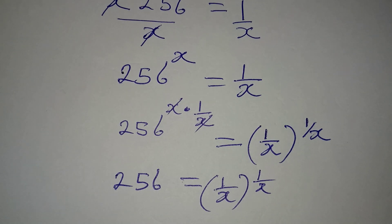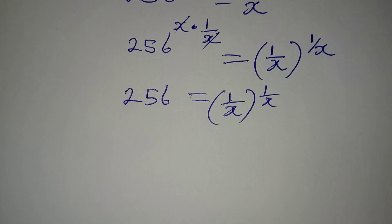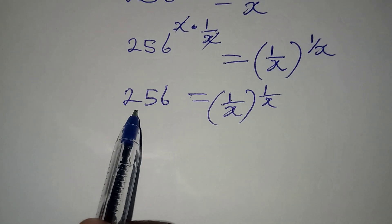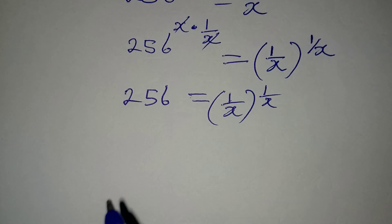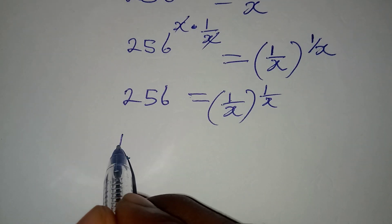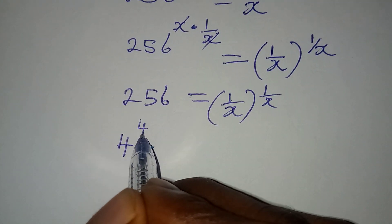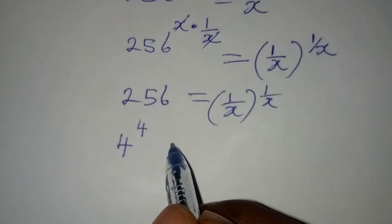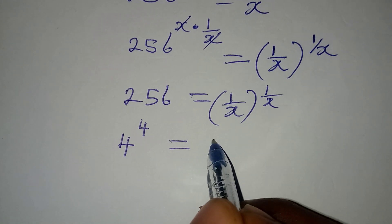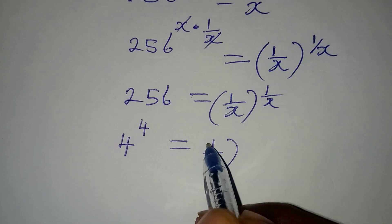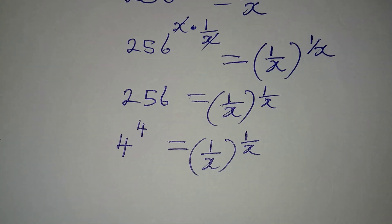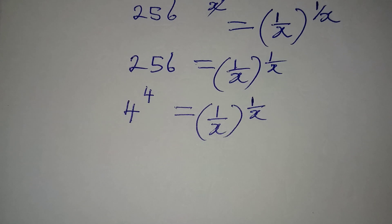Now we rewrite 256 in index form. Since 4 × 4 × 4 × 4 = 256, we can write it as 4 to the power of 4. So we have 4^4 = (1/x)^(1/x), and from here we begin to compare.